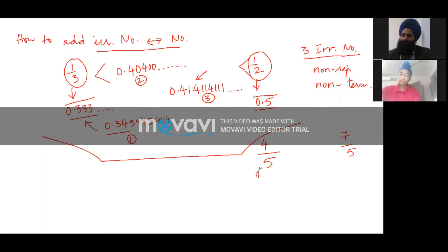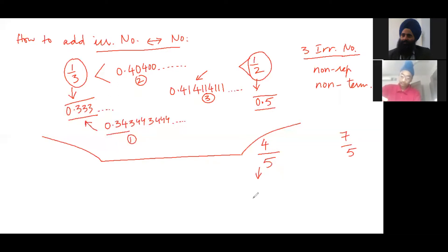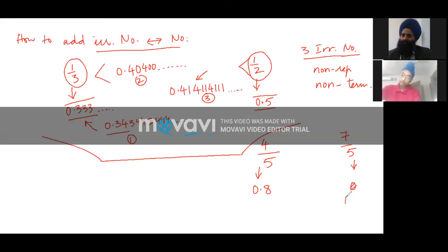First step, convert 4/5 into decimal fraction, obviously it is 0.8. Convert 7/5 into decimal fraction, it is 1.4.